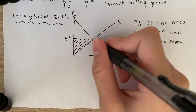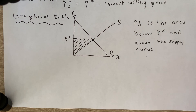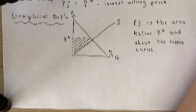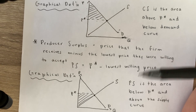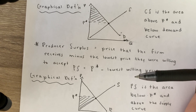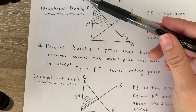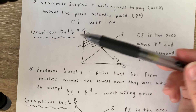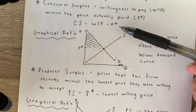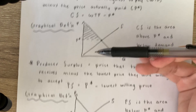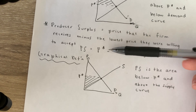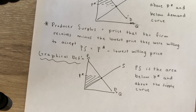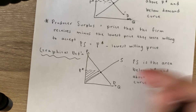Make sure you're comfortable with these concepts. Know how to locate consumer surplus versus producer surplus on a graph. Consumer surplus is WTP minus P star, and producer surplus is P star minus the lowest willing price. Let's look at a quick example.